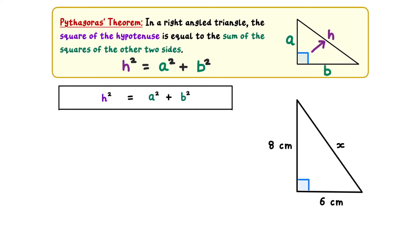H refers to the hypotenuse, which is the side across from the right angle. In our triangle, this corresponds to X. A and B refer to the other two sides, and these can be assigned in either order. In our triangle, we can let A be 8, and B be 6.